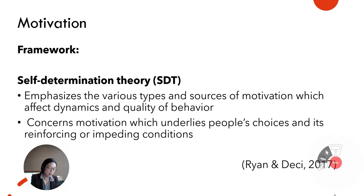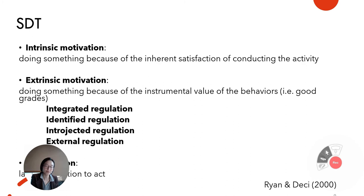What then is motivation as defined within SDT? According to Ryan and Deci, motivation concerns what moves people to action. Self-Determination Theory emphasizes the various types and sources of motivation which affect dynamics and quality of behavior. It concerns motivation which underlines people's choices and its reinforcing or impeding conditions. Another mini-theory of SDT is Organismic Integration Theory or OIT. In OIT, there are three types of motivation: one, intrinsic motivation; two, extrinsic motivation, which is broken down into four subcategories according to varying degrees of autonomy.